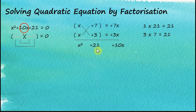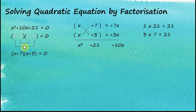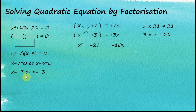We got all three terms we want, so these two expressions are the factors of this quadratic equation. Once we have it in factored form, we solve it: x plus 7 equals zero or x plus 3 equals zero, giving x equals negative 7 or x equals negative 3. That's how we solve quadratic equations by factorization.